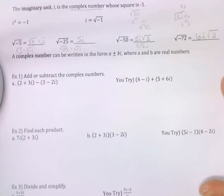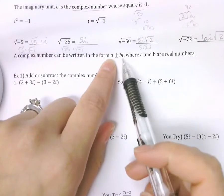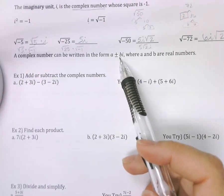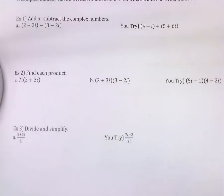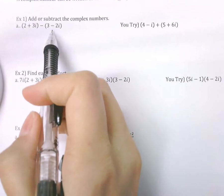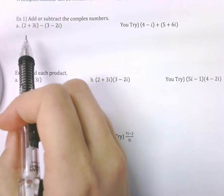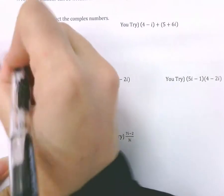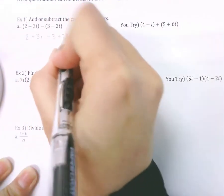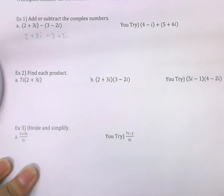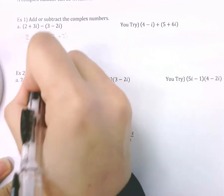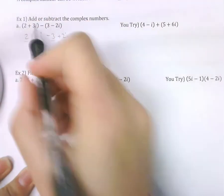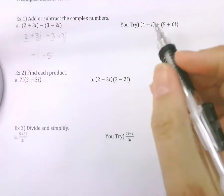We can add and subtract things with i, which creates other complex numbers. A complex number is anything that can be written in the form a plus bi — even if a is 0, if there's an i involved, it's a complex number. In example 1, we have two complex numbers and we're subtracting them. We subtract these like we would with x's: distribute the negative sign first, then combine like terms. 2 and negative 3 combine to give negative 1. 3i and 2i combine to give 5i. So the difference of (2 + 3i) and (3 − 2i) is negative 1 plus 5i.